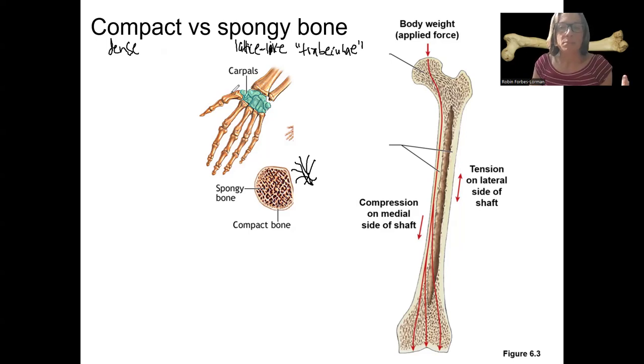Most bones have compact bone on the outside and then spongy bone on the, in the middle. Or somewhere in the middle. For a long bone, that would only be at the ends. Long bones have a lot of compact bone along the shaft in order to provide strength where support's needed. So compact bone is much stronger. It's located on the diaphysis of long bones because of that. And places where muscles attach, it's going to be even thicker.